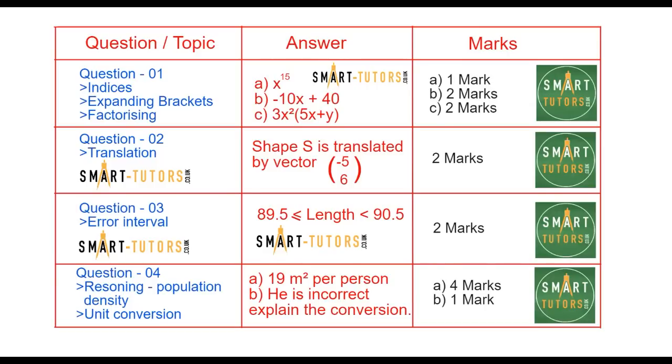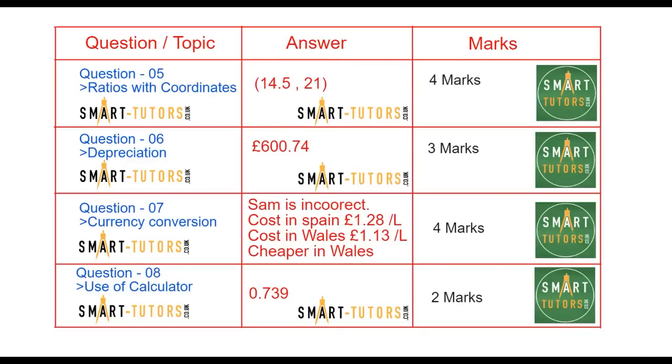Question number three is an error interval. Question number four is reasoning, involving population density with some unit conversion. Have a look at the answers and marking scheme. Question number five is ratios with coordinate geometry. You need to find out a point's coordinate with the given information.